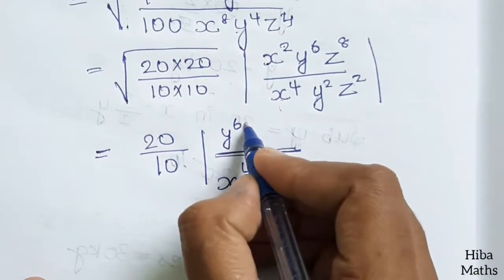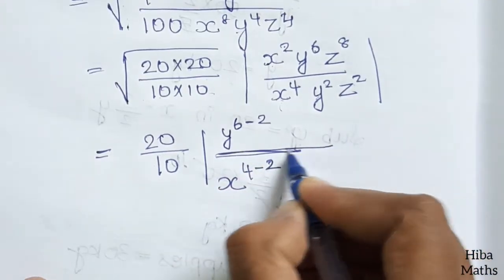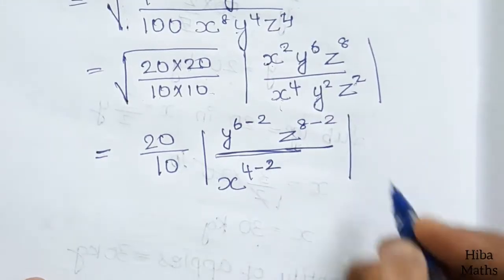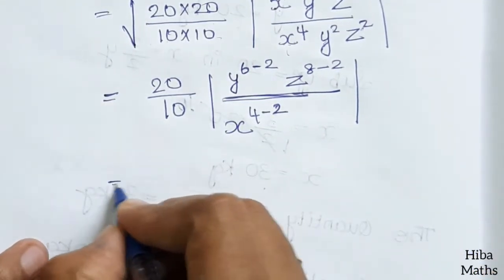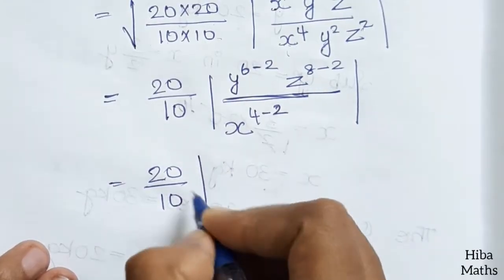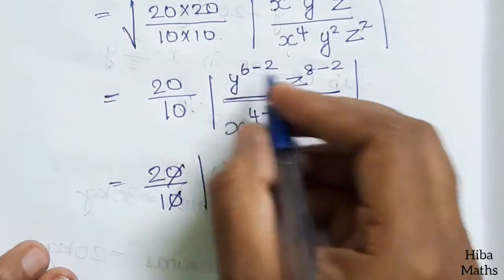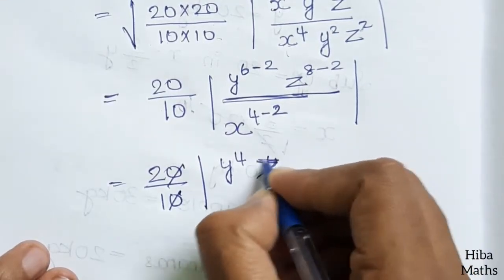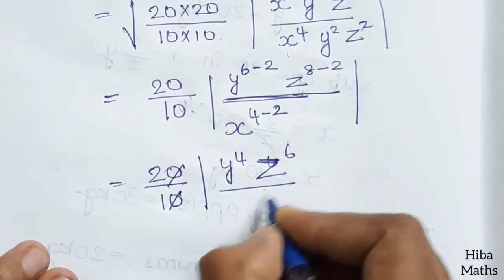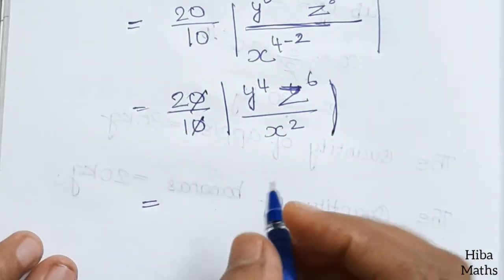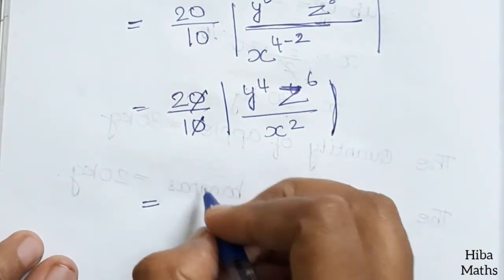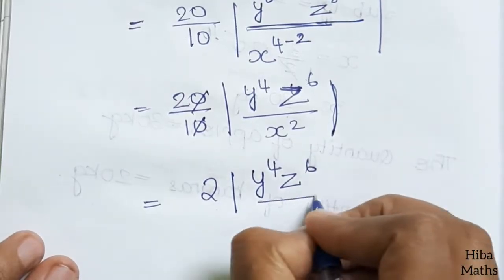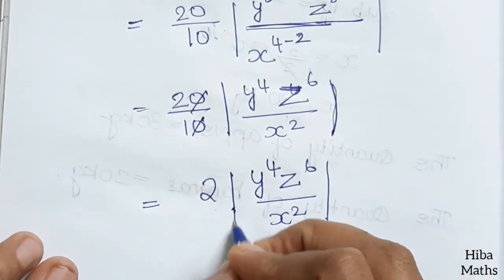For y, 6 minus 2 equals 4. For z, 8 minus 2 equals 6. After cancellation, we get 20 by 10 and the zeros cancel. The final answer to question 1 is y power 4, z power 6, divided by x power 2.